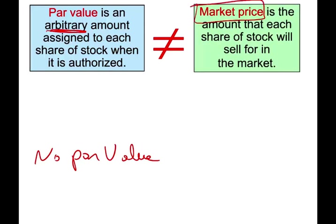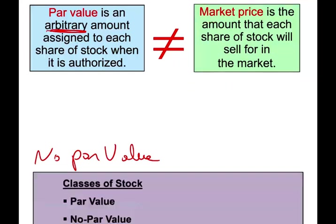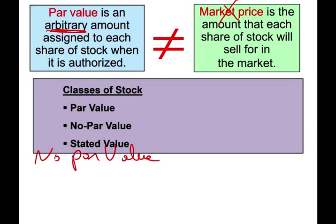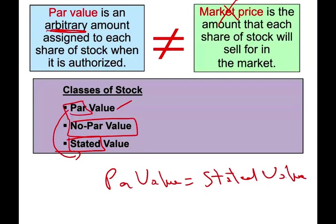The par value is different from the market price. The market price is how much the stock is selling at — for example, Johnson & Johnson could be selling right now for $123 or $125. The par value is just an arbitrary amount; we don't worry about the market price since it changes every day. So we have stocks with par value, stocks with no par value, and in some states, stocks with a stated value. The stated value is basically the same as the par value — an arbitrary amount assigned to the stock.